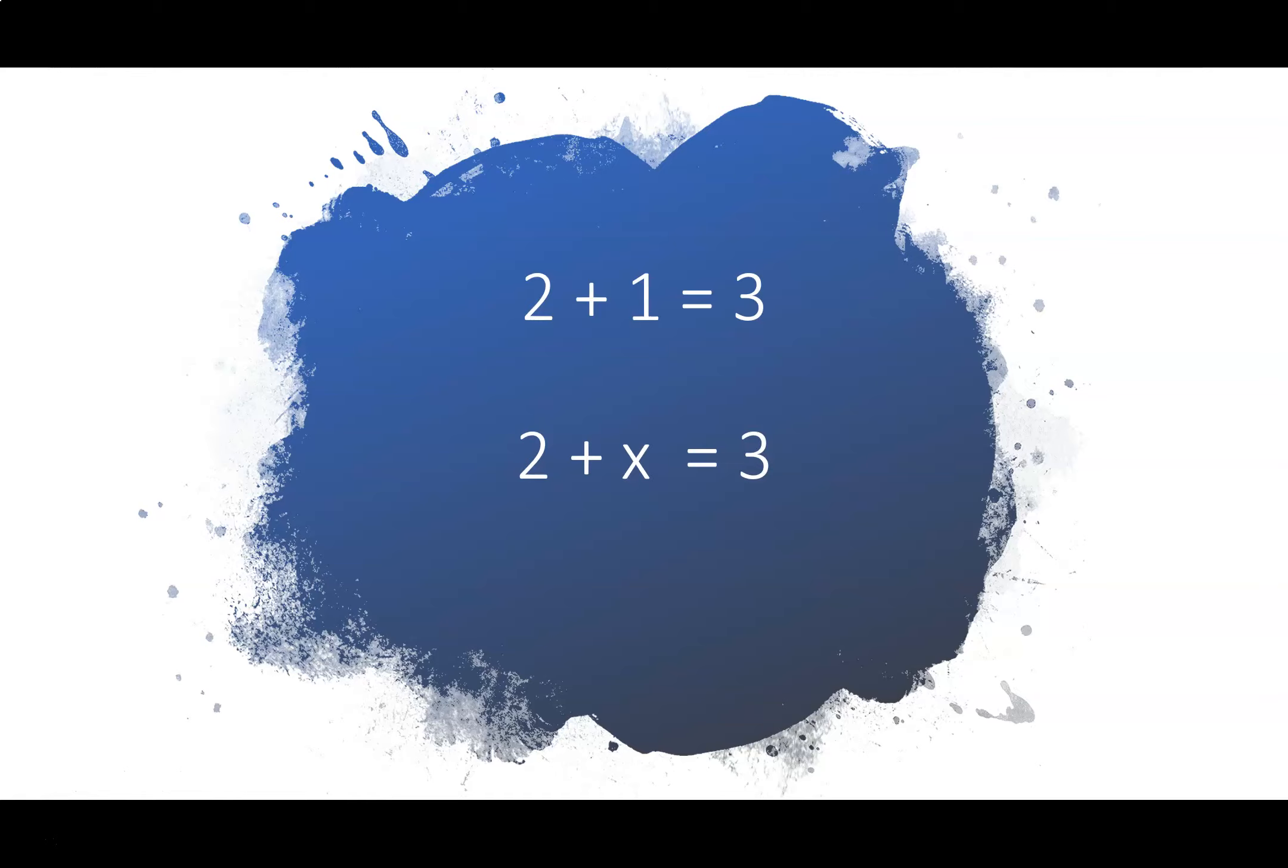If we all saw this first equation, 2 plus 1 equals 3, we would say that that is pretty simple math. We could rearrange this equation with an unknown quantity. Unknown quantities is a fancy way of saying a fill-in-the-blank. And in math, fill-in-the-blank questions are sometimes shown with letters. In this case, we have an x. 2 plus x equals 3. Another way of saying this is 2 plus something, a fill-in-the-blank, equals 3.